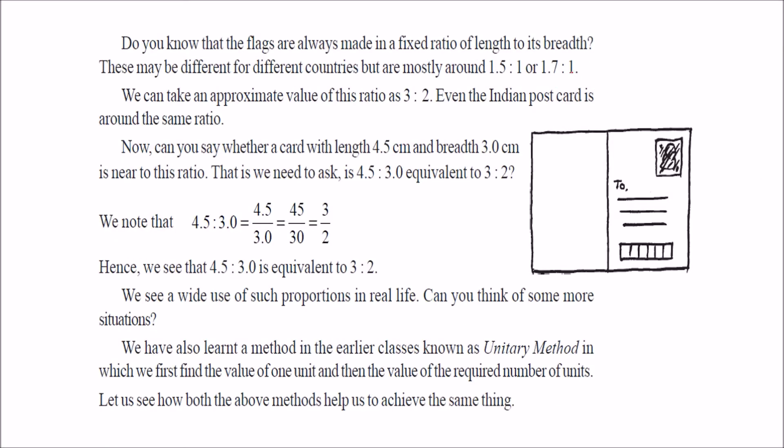Another example you can take is the national flag of various countries. They always make like this. The length and breadth 1.5 is to 1 or 1.7 is to 1. Similarly, the postcard where we used to write. So postcard, say 3 is to 2 ratio. This is how we make or keep things in proportion.